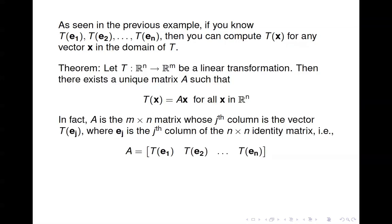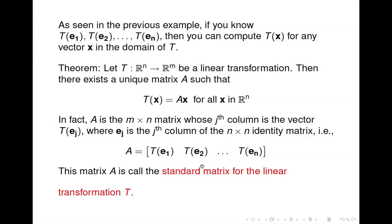Here it is in more formal terms. If T maps R^n to R^m, then there is a unique matrix A such that T(x) = Ax. In fact, A is the m×n matrix whose j-th column is the vector T(e_j), where e_j is the j-th column of the identity matrix. This is exactly what we came out with in the earlier example: our matrix A had columns T(e1) and T(e2). This matrix A is called the standard matrix for the linear transformation T.